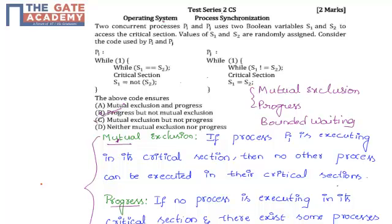From this question, we learned what is meant by mutual exclusion and progress, and how to determine whether these two properties are preserved in processes PI and PJ. Thank you.